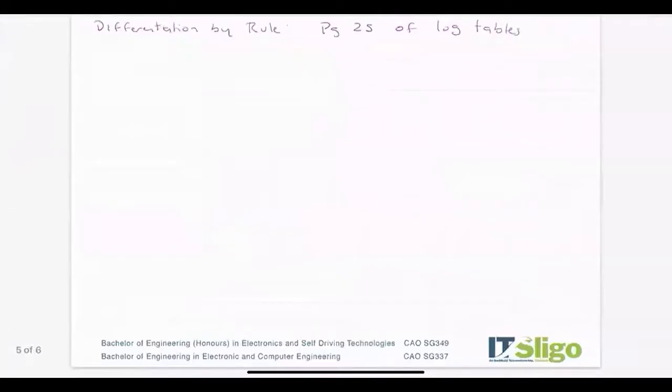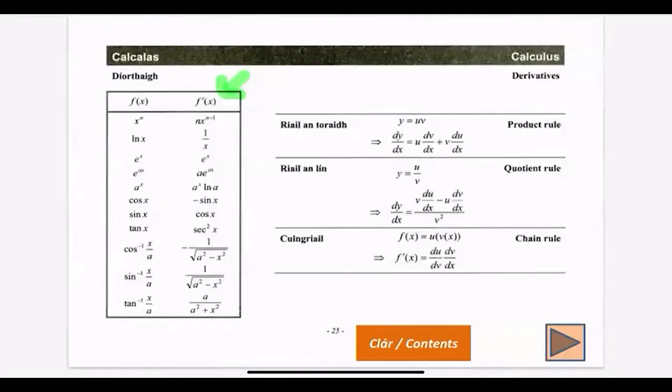If we differentiate by rule, page 25 of the log tables shows a list of functions and their differentiated outputs. Mathematicians have figured out the generic case.